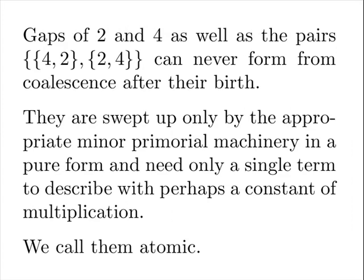Gaps of two and four, as well as the pairs, can never form from coalescence after their birth. They are swept up only by the appropriate minor primordial machinery in a pure form and need only a single term, a single primordial minor, to describe them with perhaps a constant of multiplication. We call them atomic. They were made or created one time only and multiply only via expansion. Coalescence can only destroy them, never create them.